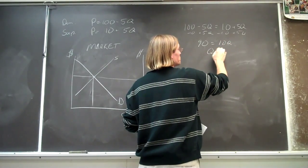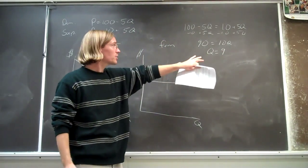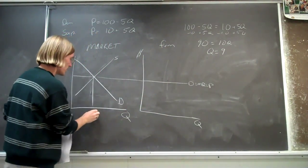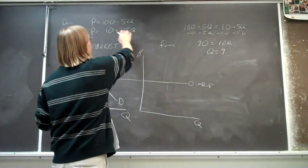so Q is equal to 9, and so that's our quantity, that's our equilibrium quantity that we solve for.